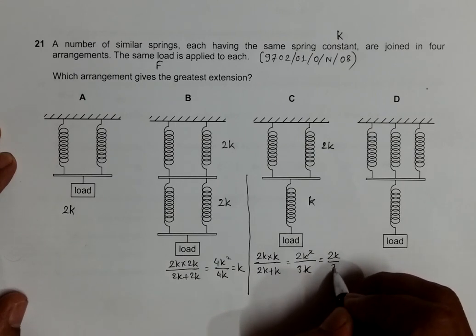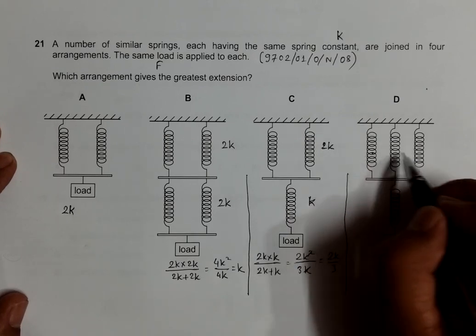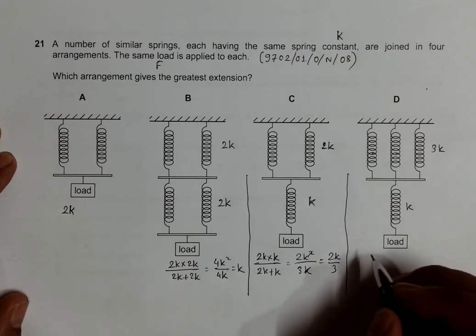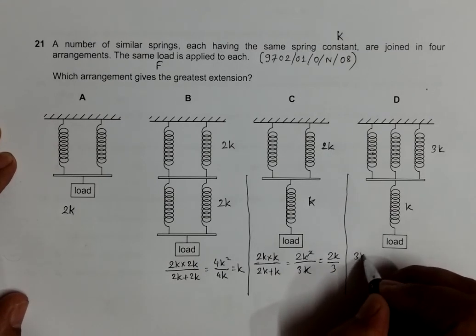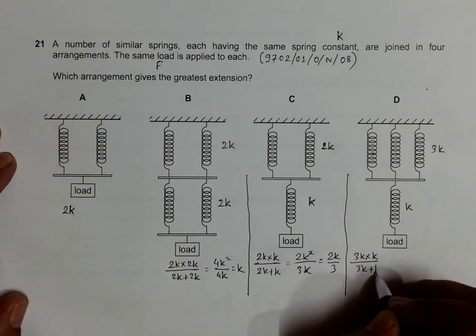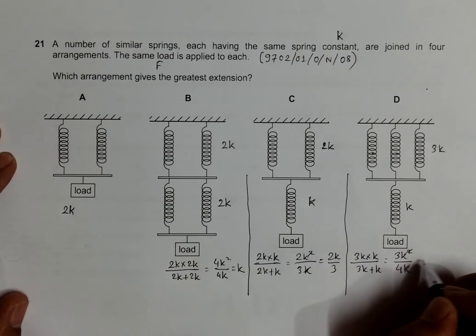And the last one, arrangement D, we have K plus K plus K which is 3K, and it is K. So we have these two in series: 3K times K divided by 3K plus K. So it is 3K squared, and this is 4K. K and K gives us 3K divided by 4K.